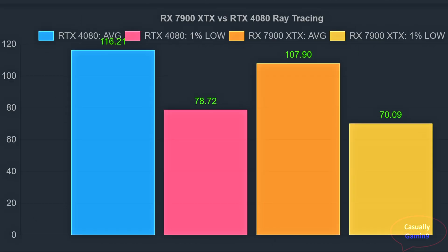Adding the results from all the games, the NVIDIA card pulls ahead when using ray tracing, which is no surprise. The 7900 XTX is quite close to the 4080 — a bit unexpected. The 4080 averaged 116.2 FPS with 1% lows of 78.7, while the 7900 XTX managed an average of 107.9 and 1% lows of 70 across all 17 games. This translates to roughly a 10% performance advantage for the NVIDIA card when enabling ray tracing.